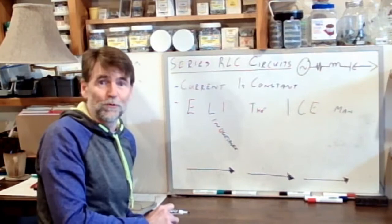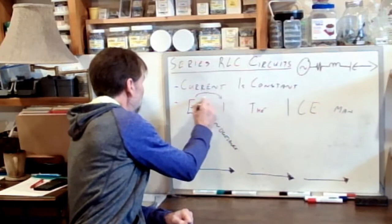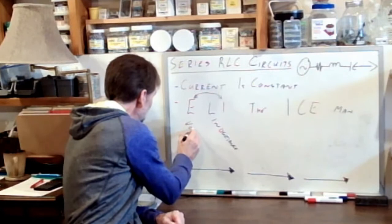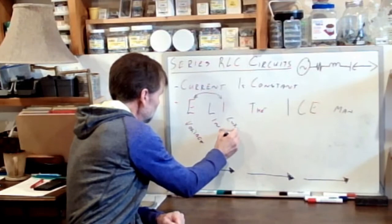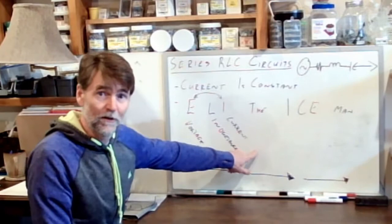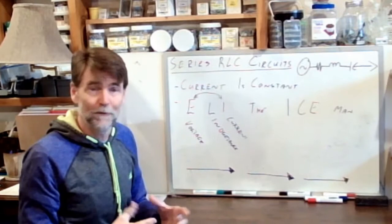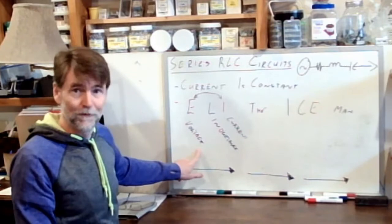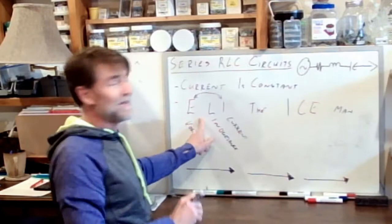So what do we know to be true about an inductive circuit? The relationship between E and I. And E is voltage and I is current. So in an inductive circuit we see that voltage comes first and current comes next, which means the voltage leads the current, or the way we typically say it when we talk about power factor is, what is the current doing relative to the voltage? The current lags the voltage in an inductive circuit.